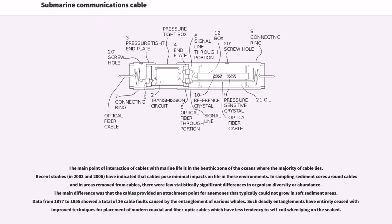The main point of interaction of cables with marine life is in the benthic zone of the oceans where the majority of cable lies. Recent studies have indicated that cables pose minimal impacts on life in these environments. In sampling sediment cores around cables and in areas removed from cables, there were few statistically significant differences in organism diversity or abundance. The main difference was that the cables provided an attachment point for anemones that typically could not grow in soft sediment areas. Data from 1877 to 1955 showed a total of 16 cable faults caused by the entanglement of various whales, but such deadly entanglements have entirely ceased with improved techniques for placement of modern coaxial and fiber-optic cables.